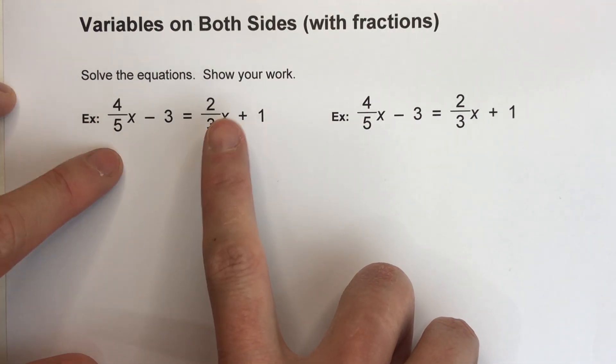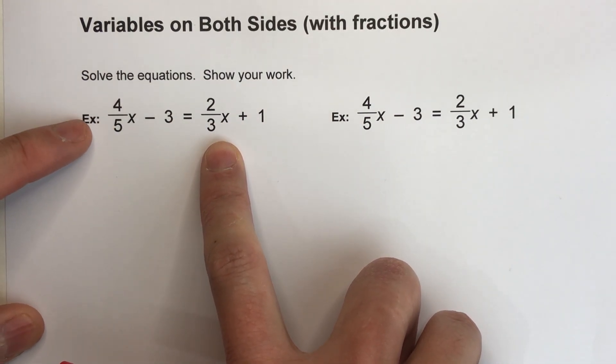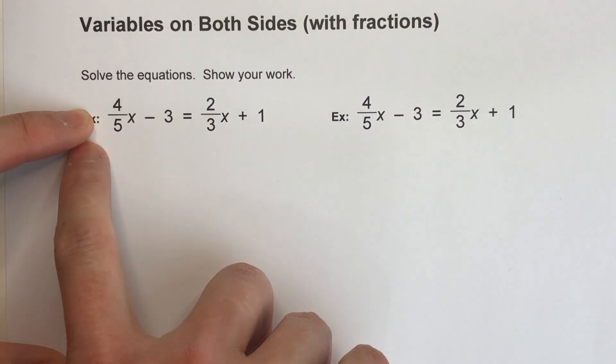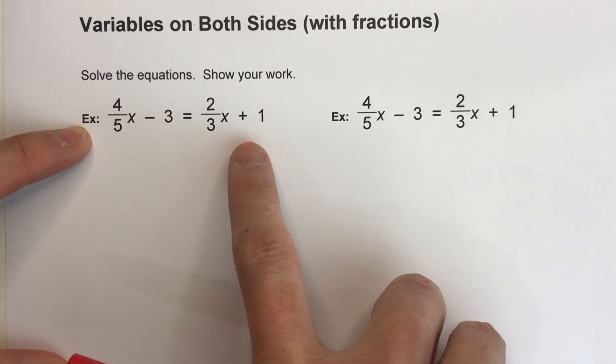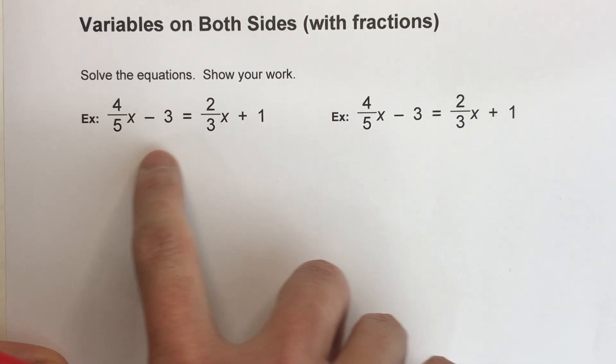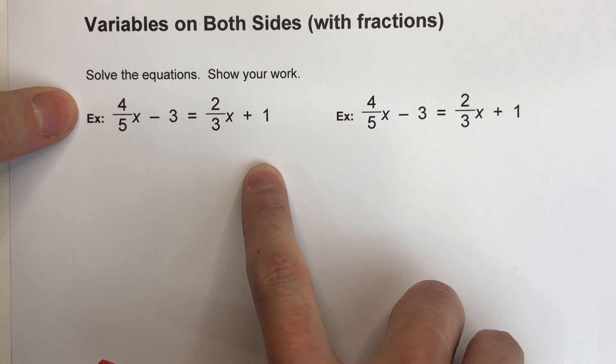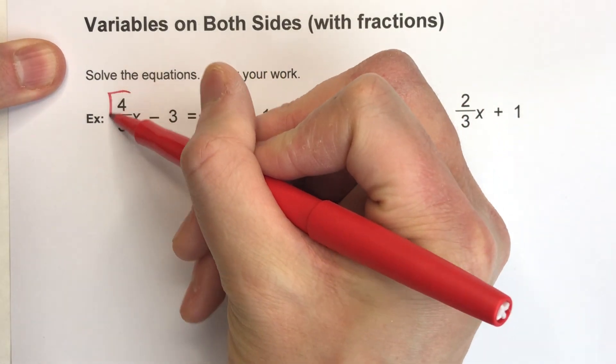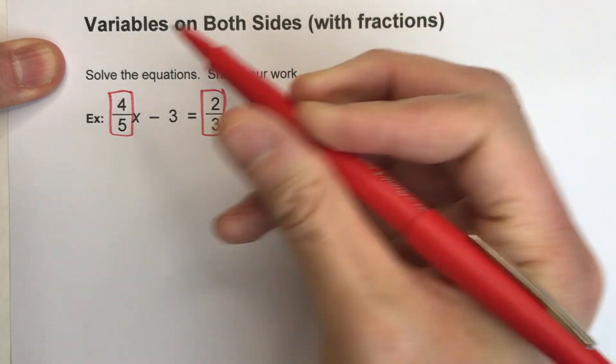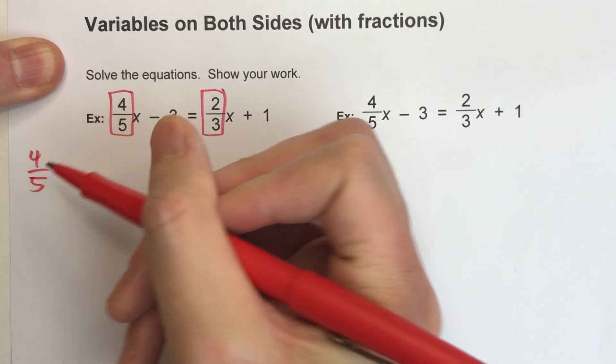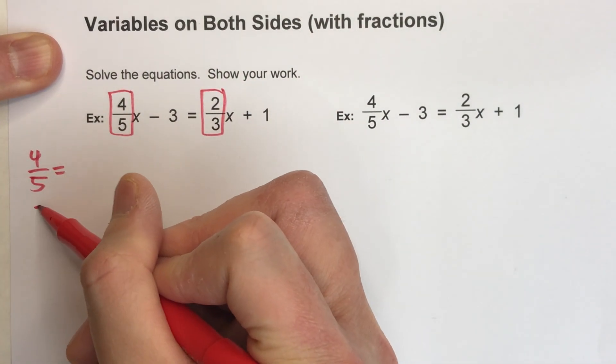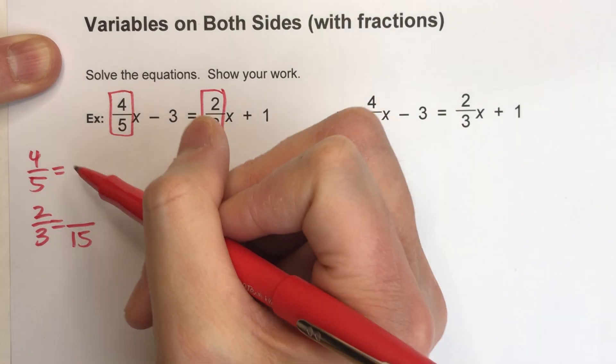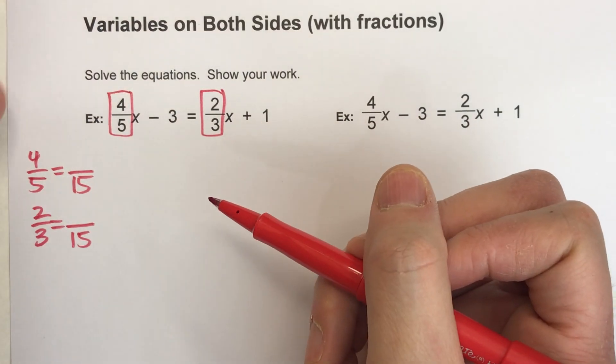So we've got x's on both sides. My first step is always to subtract off all the x's off one side so that there are only x's on one side of the equal sign. So I know I'm going to have to subtract 2/3x on both sides. But before I can subtract fractions, I really need a common denominator here. So I'm going to first find my common denominator of 4/5 and 2/3. I know from looking at it, 5 and 3, 15 is my common denominator.